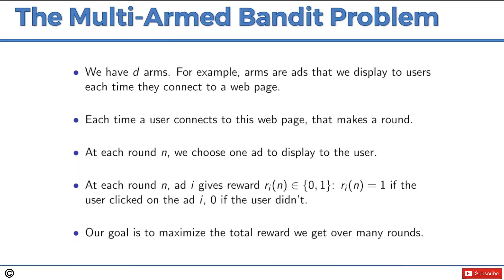So let's go through this very quickly so we can get to the fun stuff. We have D-arms. For example, arms are ads that we display each time a user comes to a web page. Each time an ad is displayed or a user visits this page, that's a round. For each round N, we choose which ad to display. Each round N, ad I gives a reward, whether it's a zero or a one. R I of N is equal to one if the user clicks on the ad and zero if they didn't. Our goal is to maximize total reward we get over the many rounds.